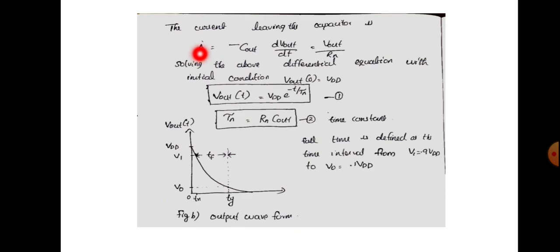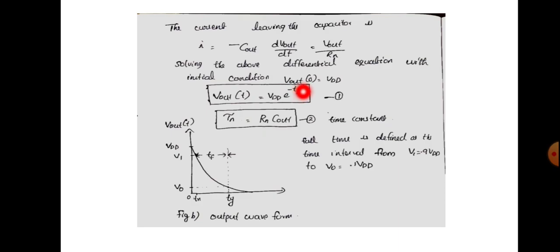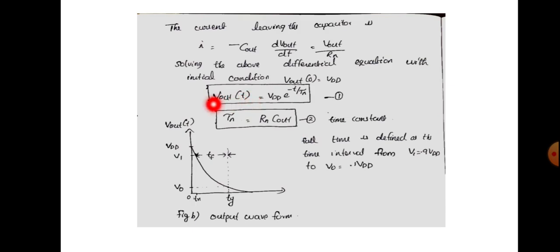The current equation is: I equal to minus Cout times dVout/dt, which equals Vout divided by Rn. This is a differential equation. The mathematical solution for Vout is: Vout(t) equal to VDD times e raised to minus t by τn, where τn is the time constant equal to Rn times Cout.